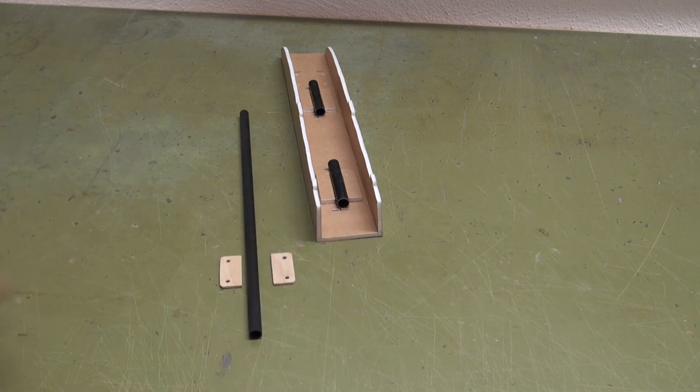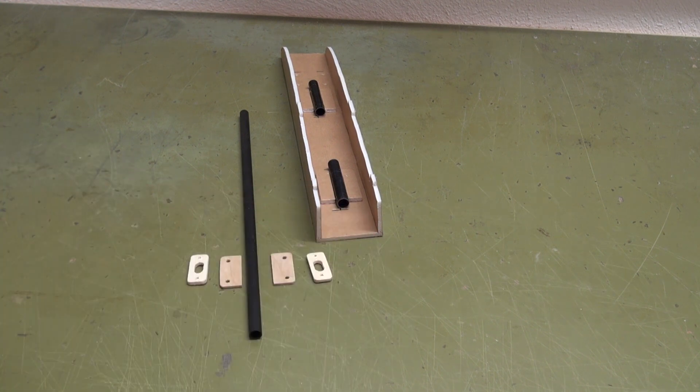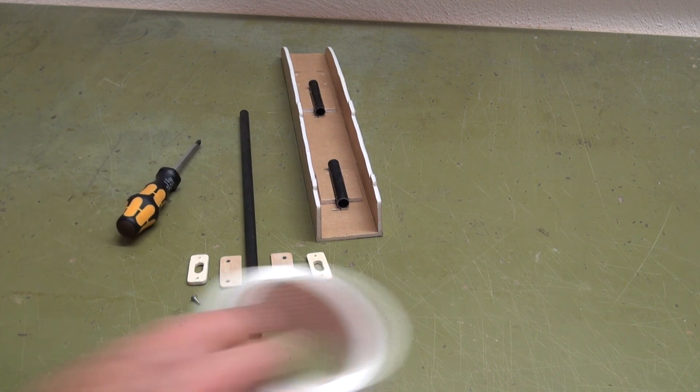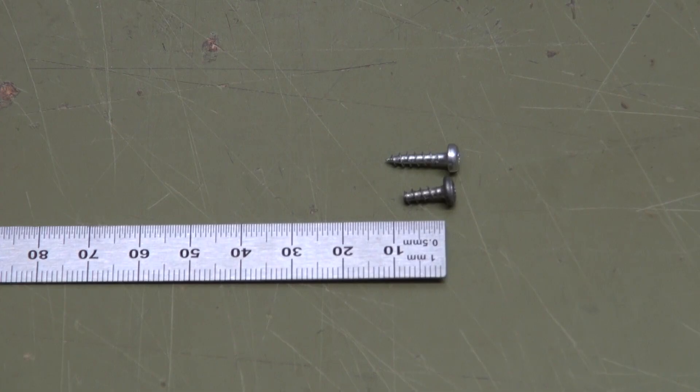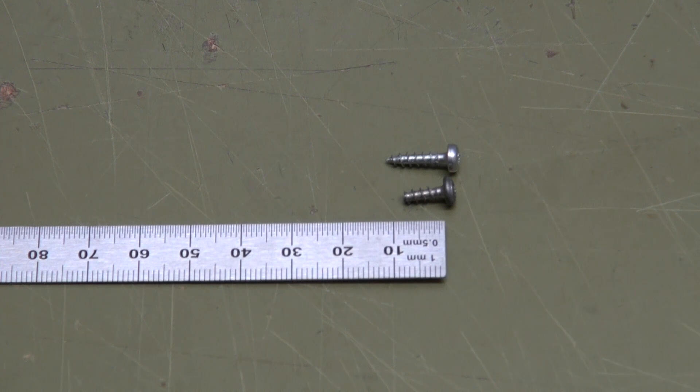For the next step we need the two wings, the two parts of the mounting base, four screws, and some tape. Shorten the screws to a length of 8 millimeters.